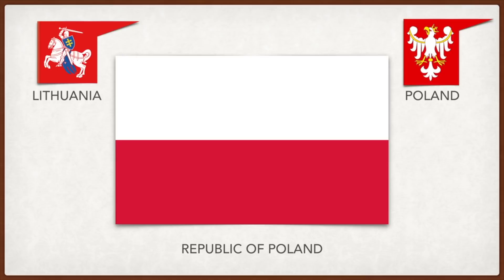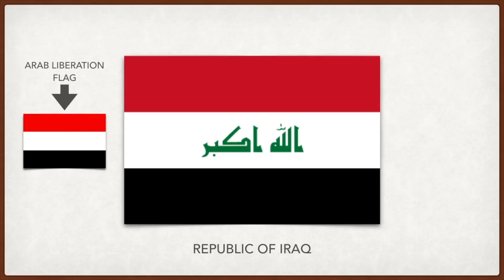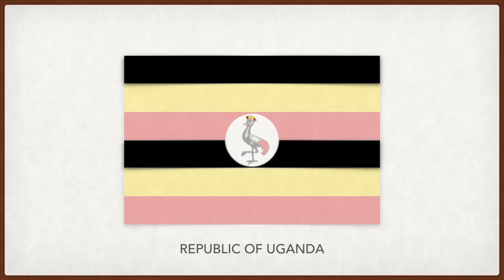Iraq: the red, white, and black are from the Arab liberation flag; the green in the middle represents Islam with the words 'God is great' in Arabic. Uganda: black is for the African people, yellow is for African sunshine, and red is African blood which connects all African people. In the middle, the grey crowned crane, native to Uganda, has a leg raised to symbolize the forward movement of the country.